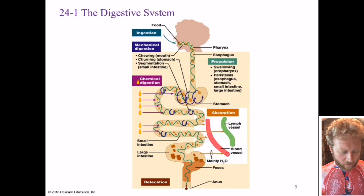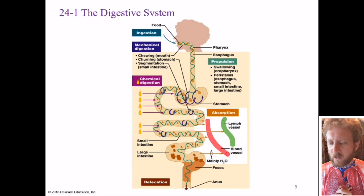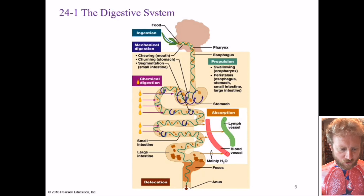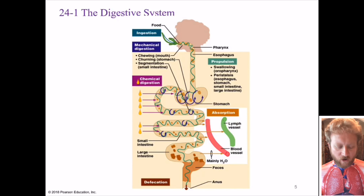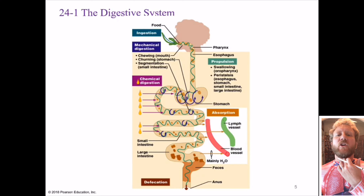Basically, we've got six major processes. The first one is ingestion — that's the food actually coming into your mouth. Then we come into mechanical digestion, which is the chewing, grinding, shearing, and tearing of the food. It happens in your mouth and also again in your stomach. Propulsion is the movement of food — swallowing, which we'll talk about in the back of your throat, going into peristalsis.